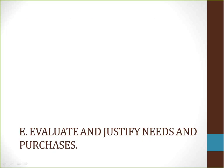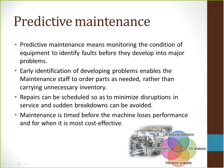Next, evaluating and justifying needs and purchases. Predictive maintenance means monitoring the condition of equipment to identify faults before they develop into major problems. Early identification of developing problems enables the maintenance staff to order parts as needed, rather than carrying unnecessary inventory. Repairs can be scheduled to minimize disruptions in service and sudden breakdowns can be avoided. Maintenance is timed before the machine loses performance and for when it is most cost-effective.